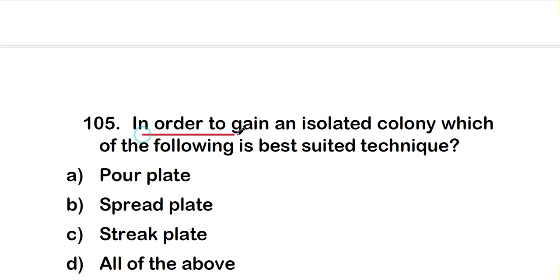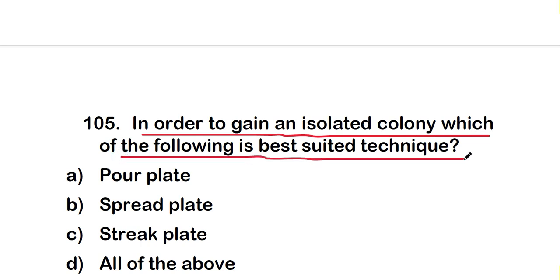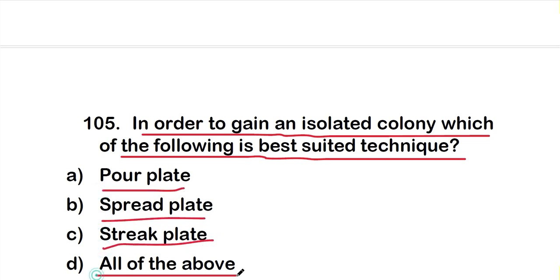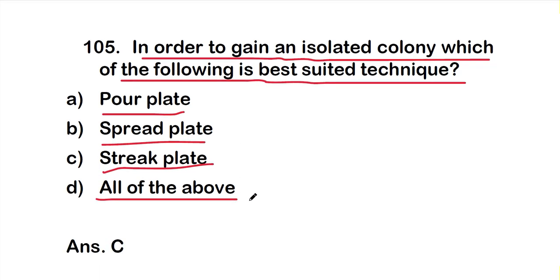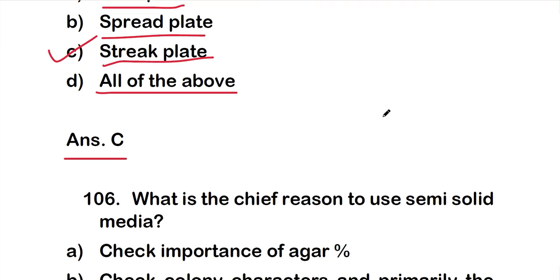Question 105: In order to gain an isolated colony, which of the following is the most suitable technique? Option A, pour plate; option B, spread plate; option C, streak plate; or option D, all of the above. The right answer is option C, streak plate. The streak plate method is the most suitable method to gain an isolated colony.